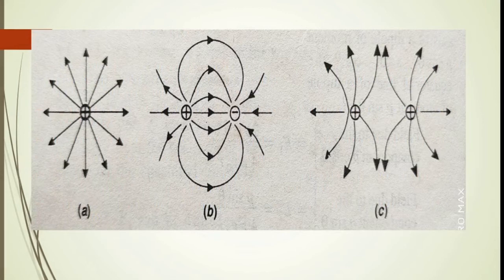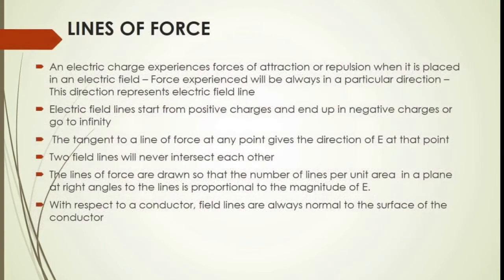The lines of force are drawn so that the number of lines per unit area in a plane at right angles to the lines is proportional to the magnitude of E — this gives the magnitude of the electric field. Also, with respect to a conductor, the field lines are always normal to the surface of the conductor.